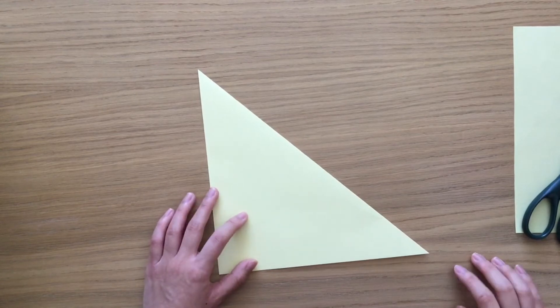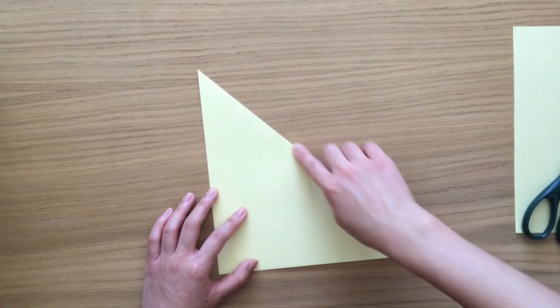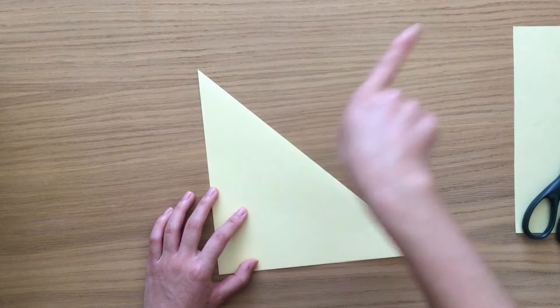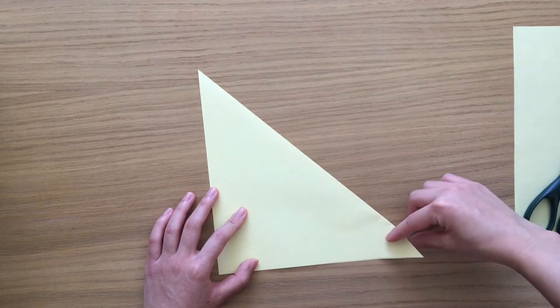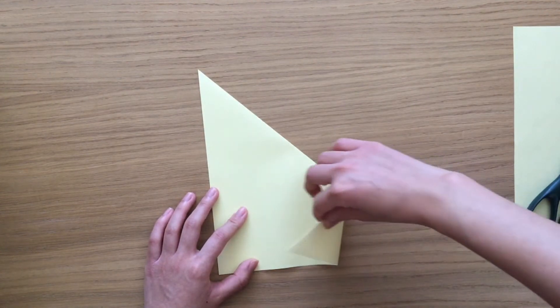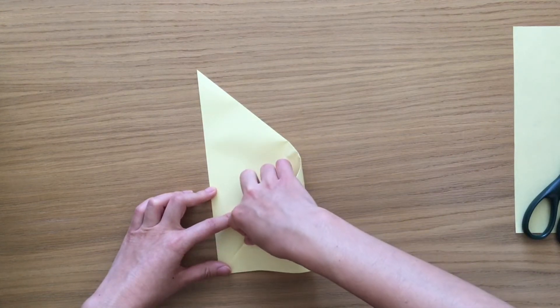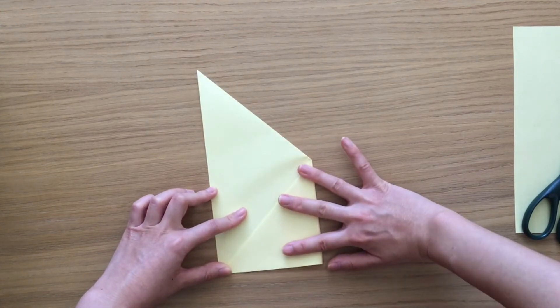Then again with our triangle. The long straight side facing that way. We're gonna fold this corner over so it lines up with the bottom and make a tail.